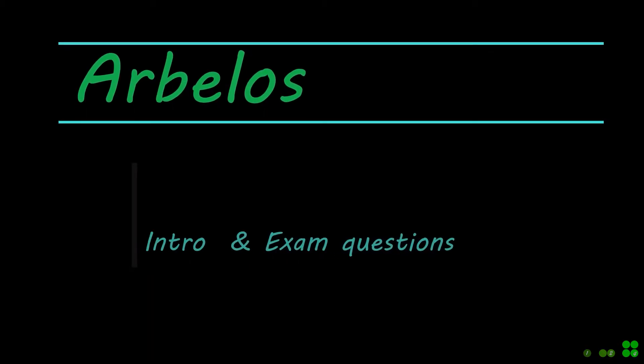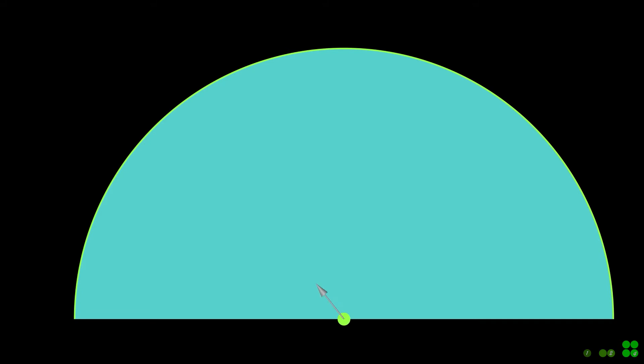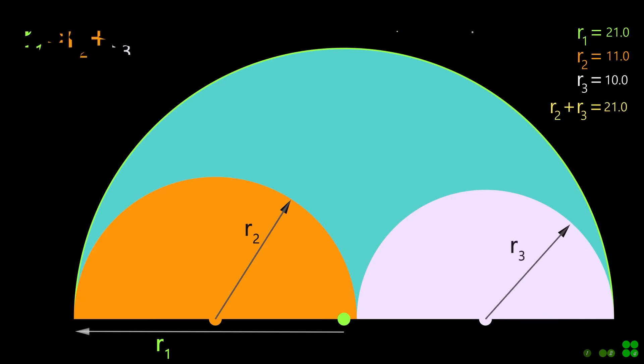Hi, let's look at the intro and some exam questions related to the area of the Arbelos. A plane semicircular region of radius R1, from which semicircles of radius R2 and R3 are removed, is called Arbelos, as shown.